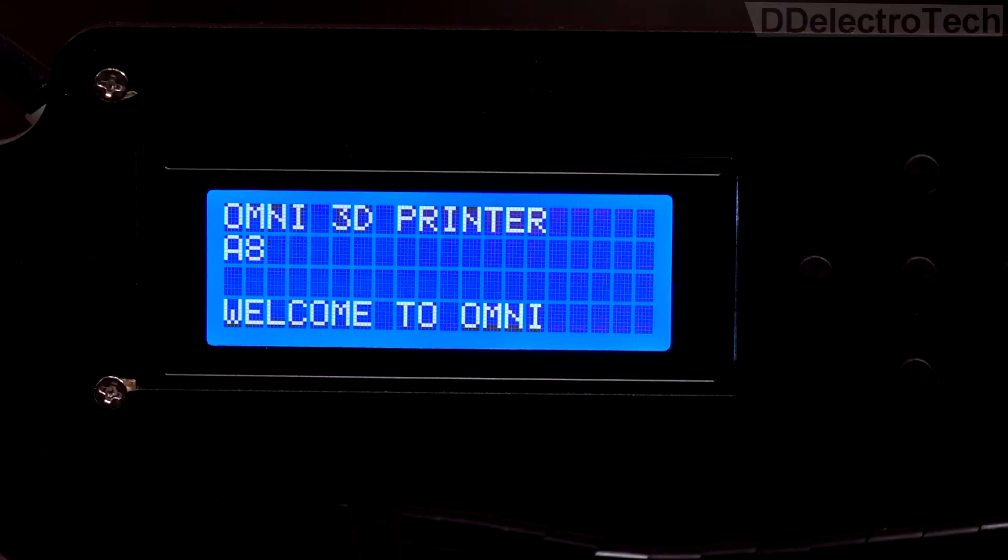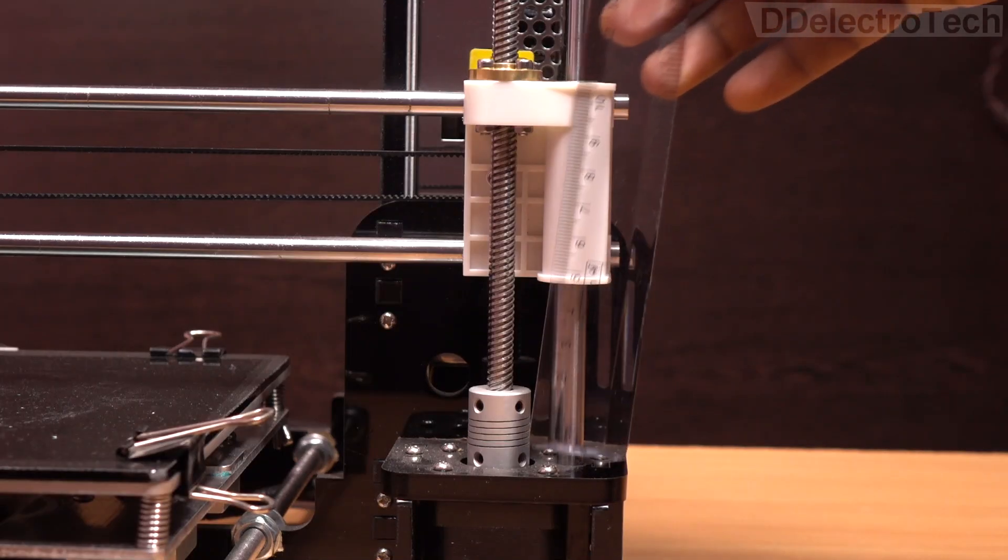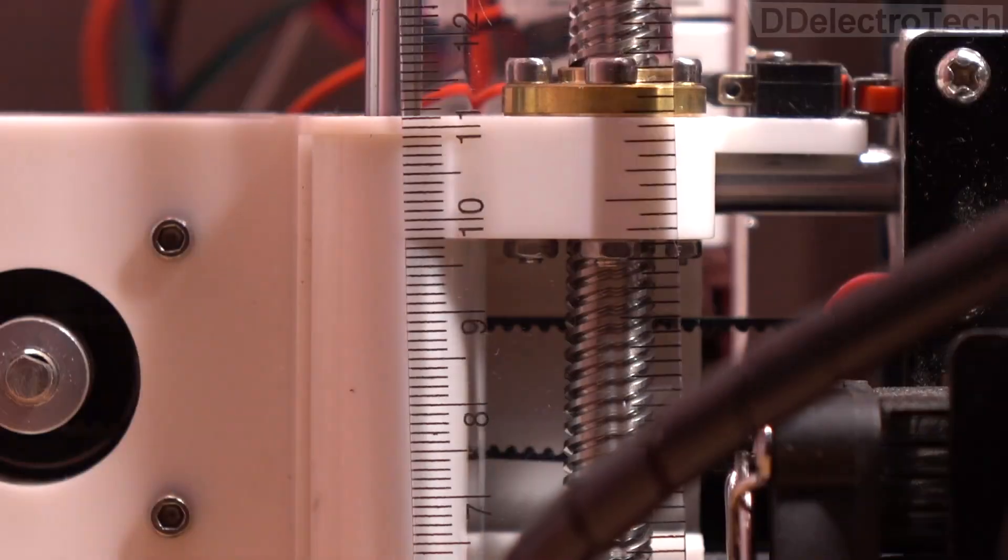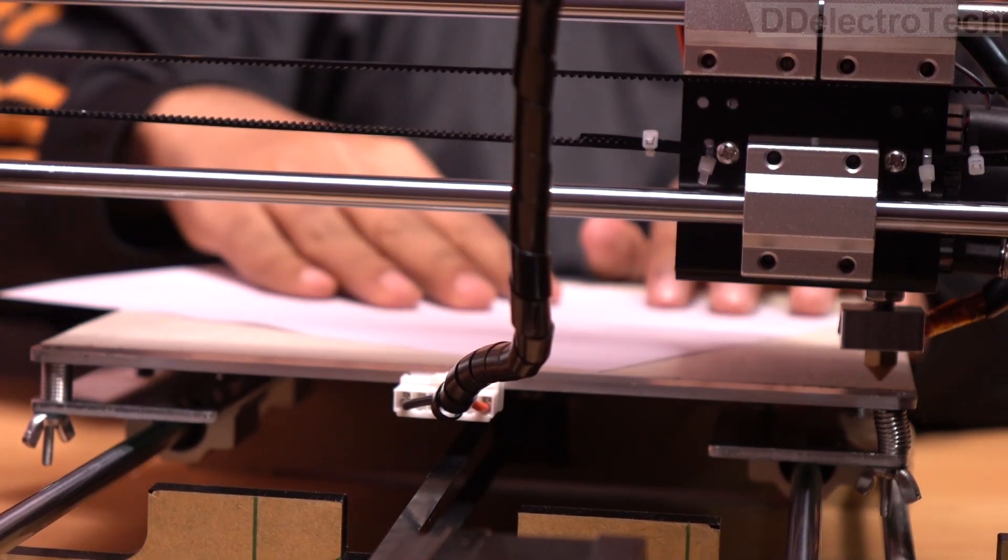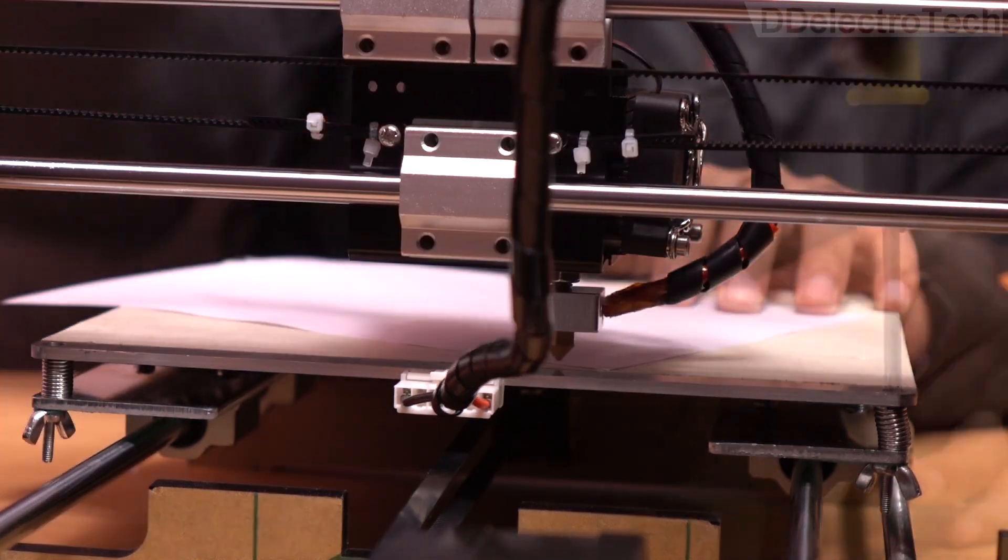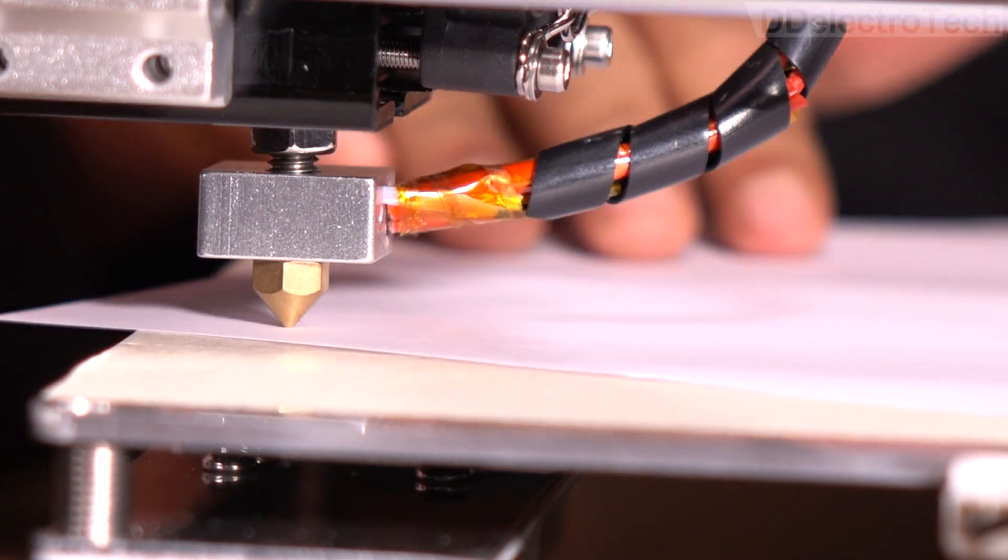Before printing, it is necessary to make some calibrations. First, we need to adjust the extruder level. Then we will adjust the gap between the nozzle head and the hotbed so that no more than a paper can pass through the gap.